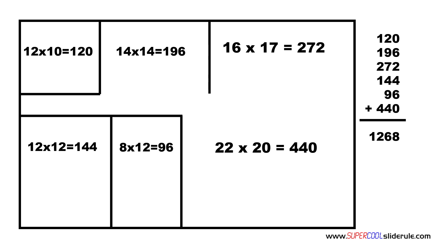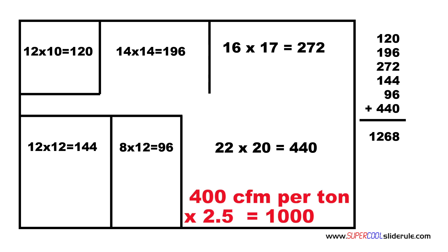We are going to assume that a proper heat load calculation has been performed and a 2.5 ton unit is required. The CFM output is 400 CFMs per ton. So multiply 400 by 2.5, our tonnage of the unit, and our answer is 1000. So the system output is 1000 CFM.